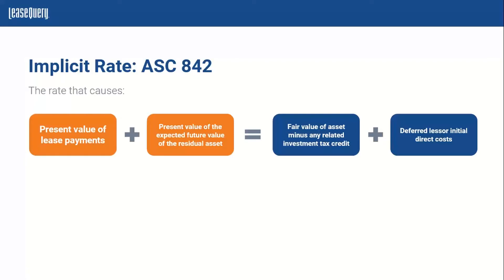The first input is the present value of the lease payments. The lessor would figure out the lease payments and use the implicit rate to present-value them. These lease payments used for the implicit rate typically would exclude most variable payments. So for leases with multiple components and variable consideration, this implicit interest rate does not always represent the expected entire return for the lessor.